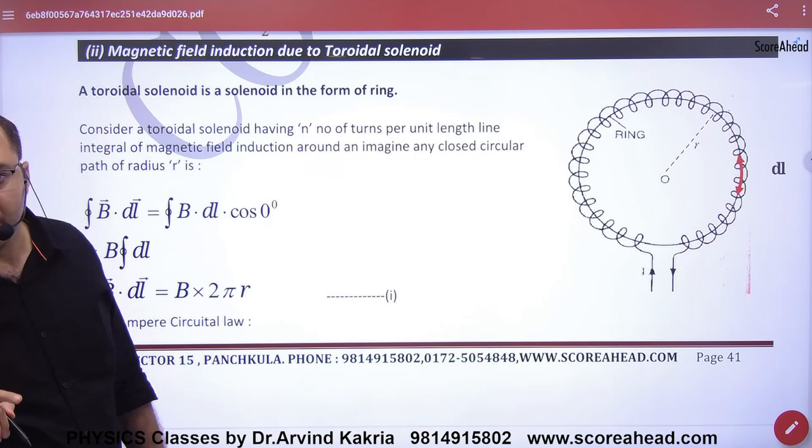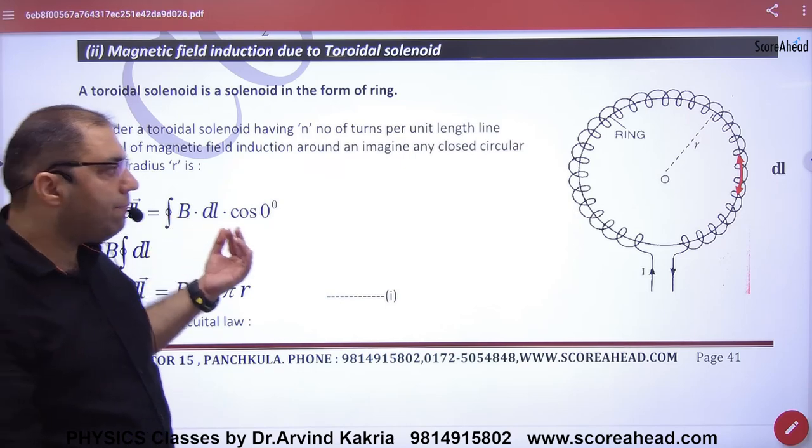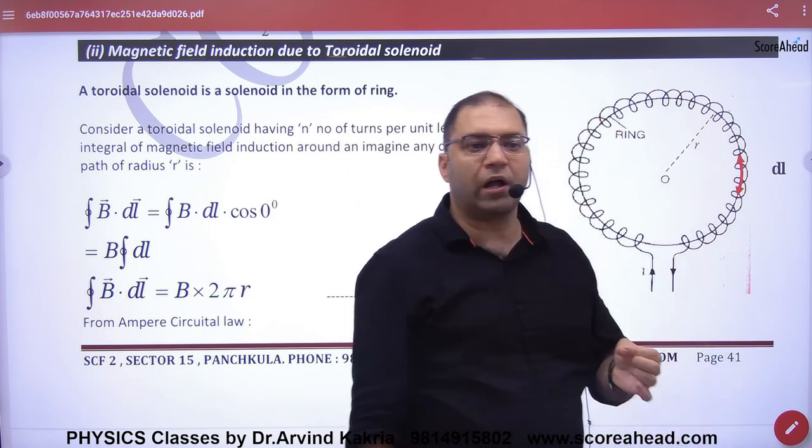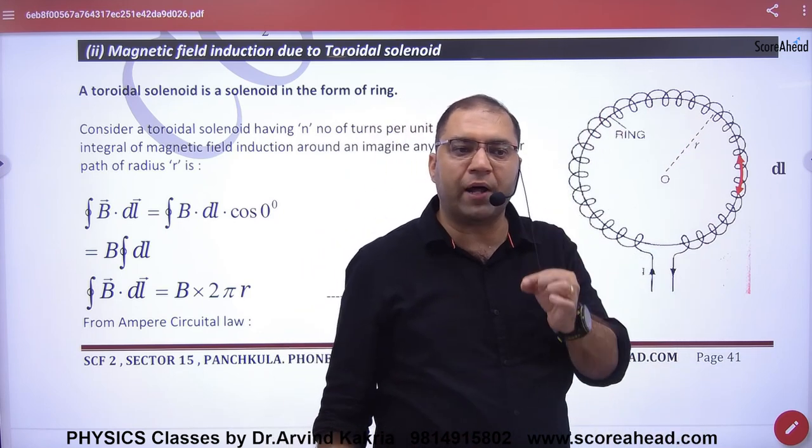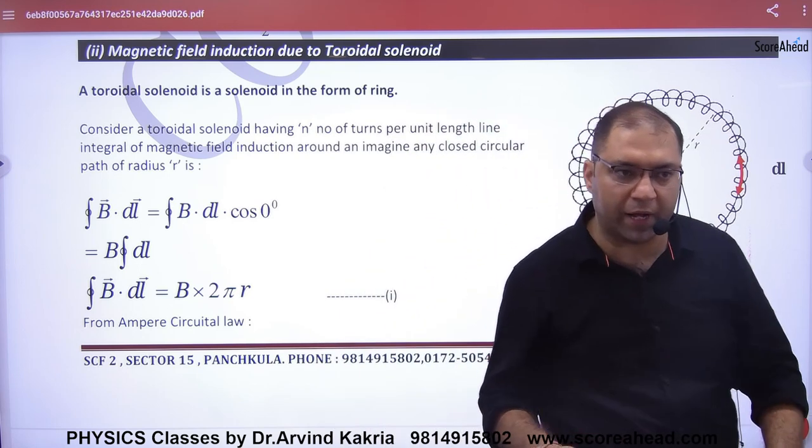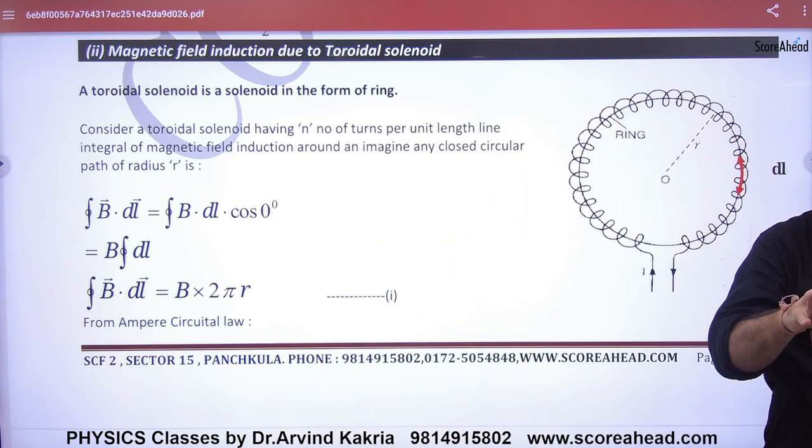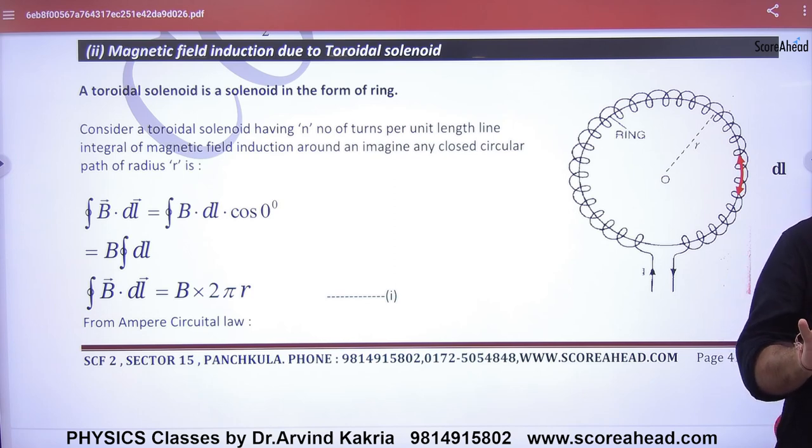Rule number one: wherever you apply Ampere's law, you take a closed path. The closed path is an imaginary ring. It is not the physical ring, it is the imaginary closed path.